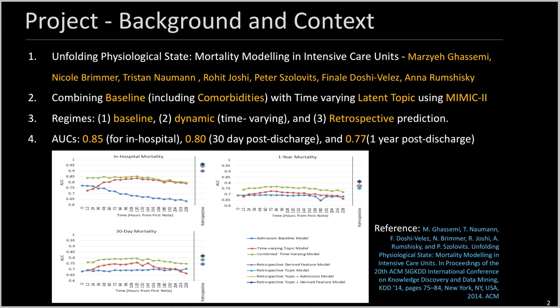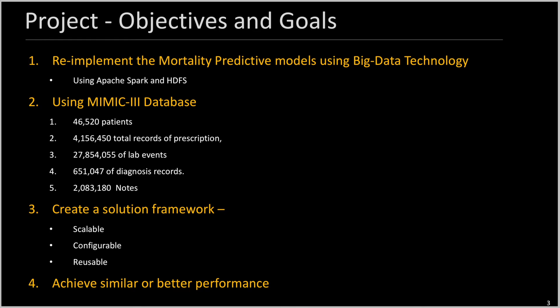Their paper was published in 2014. The groundbreaking part of their work was combining baseline features with time-varying latent topic features extracted from free text clinical notes. They used the MIMIC2 dataset. The result they achieved was 0.85 ROC area under the curve for in-hospital mortality prediction, which itself was extremely high. The main objective of my project was to reimplement their work using big data technology.